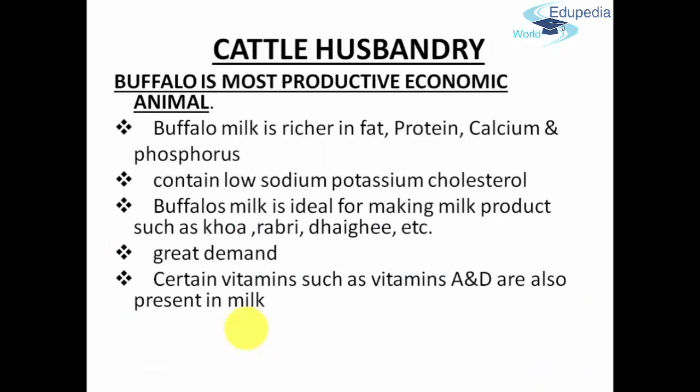Buffalo is the most productive economic animal we know. Buffalo's milk is richer in fat, proteins, calcium and phosphorus — it is really rich in all these nutrients. It also contains low sodium, potassium and cholesterol. Buffalo's milk is also ideal for making milk products such as Khoya, Dahi, ghee and more, which is exactly why buffalo's milk is in great demand. Certain vitamins such as vitamin A and D are also present in the milk.